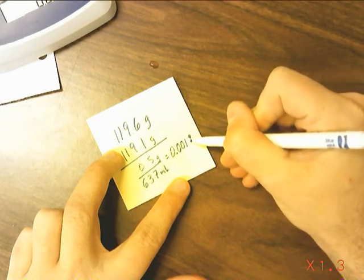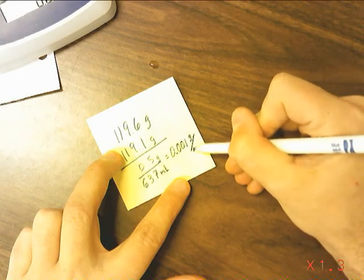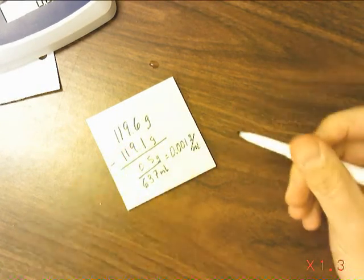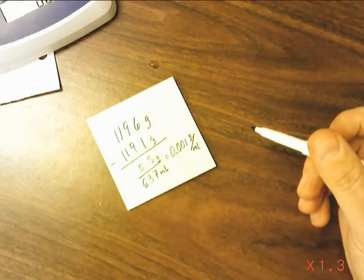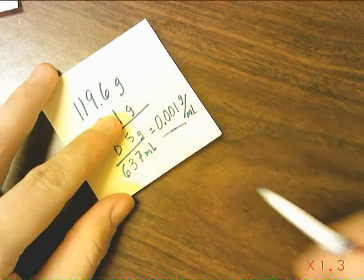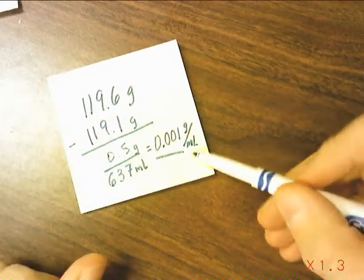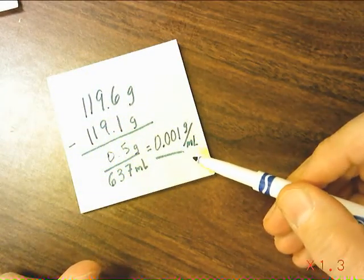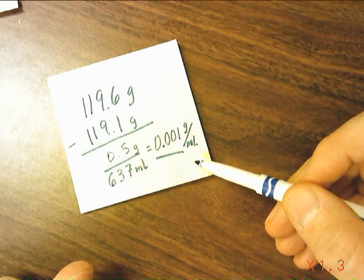you would find that the density of air is 0.001 grams per milliliter. This means that one milliliter of air has a mass of 0.001 grams.